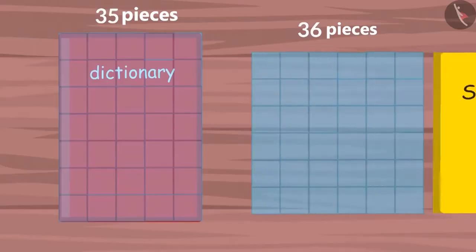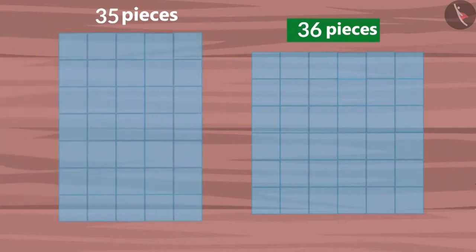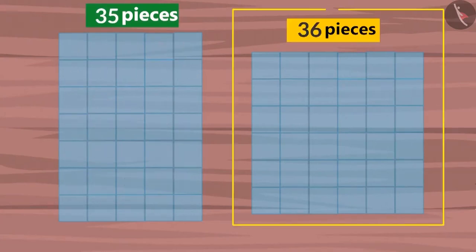Because Neha's book will occupy as much space as 36 pieces. And your book will occupy as much space as 35 pieces. This means that Neha's book occupies more space than your book.